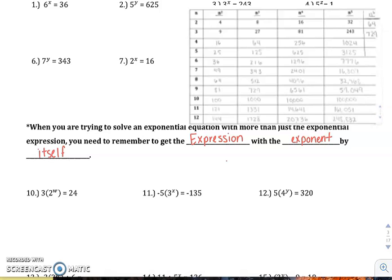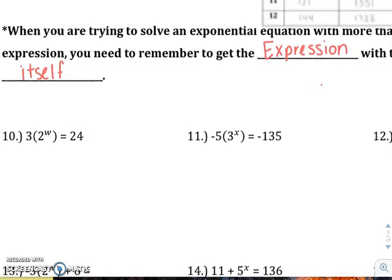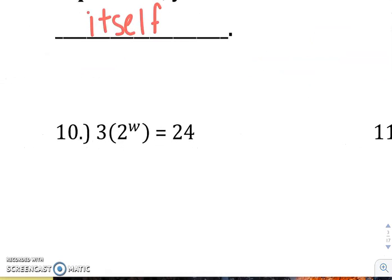So if we look at some of the examples, like number 10, 3 times 2 to the W equals 24. We want this to be the only thing over there, so we need to move or remove that 3.